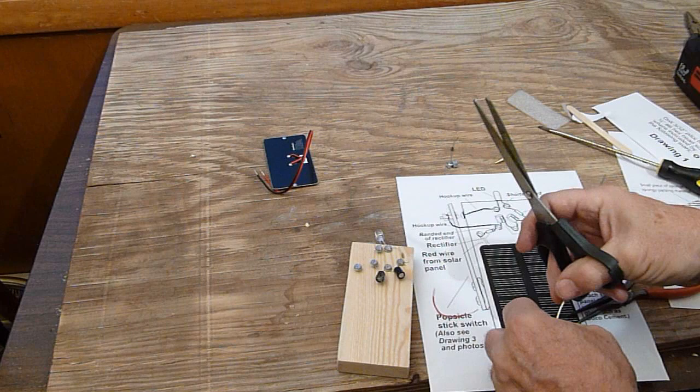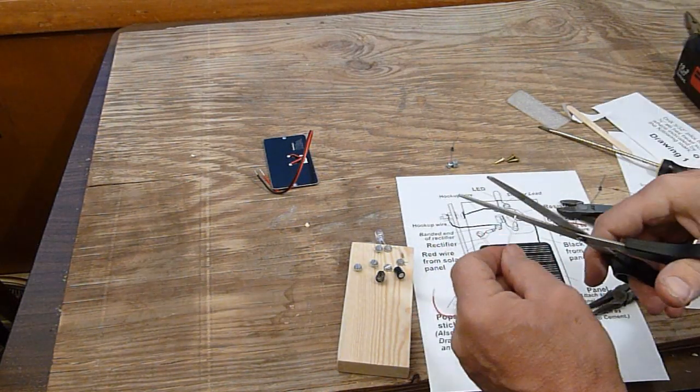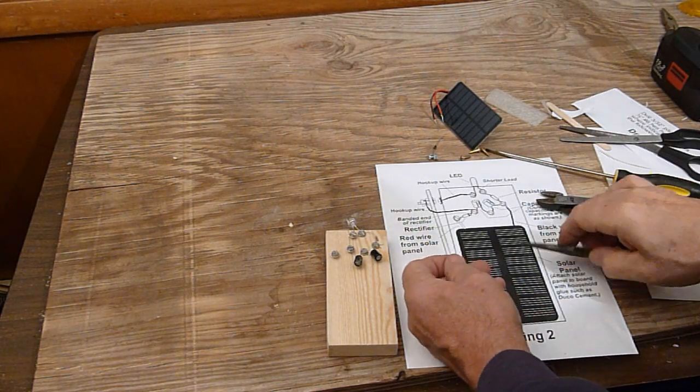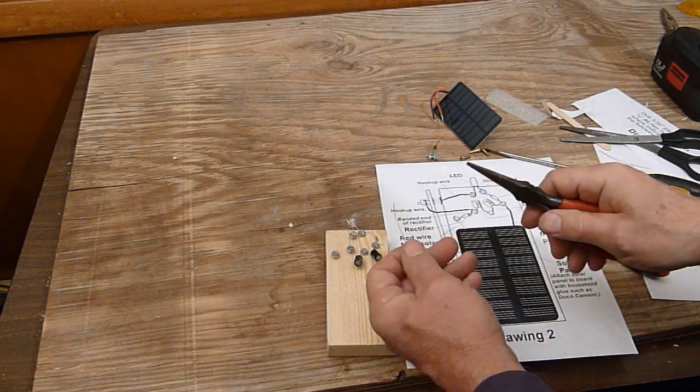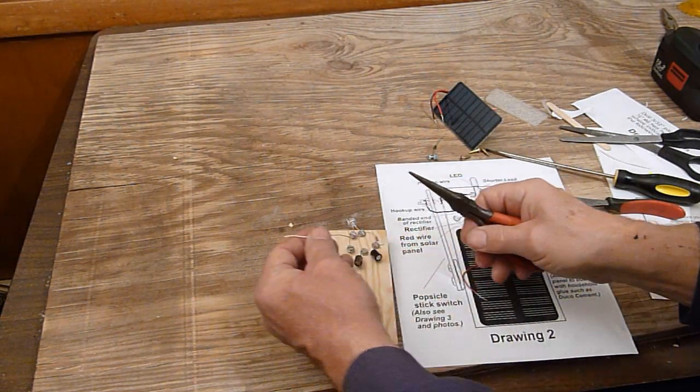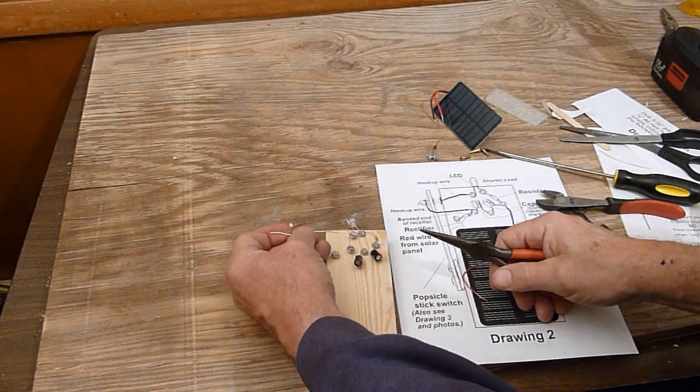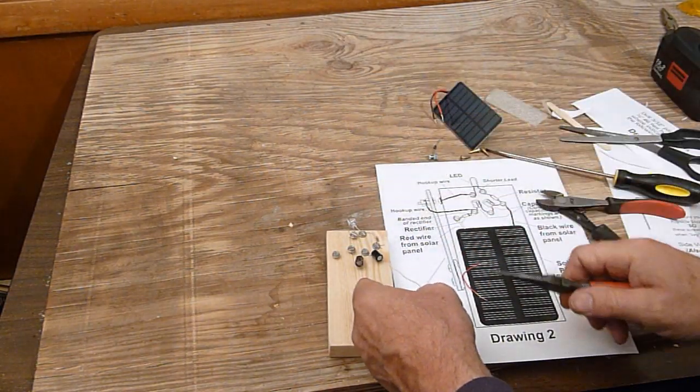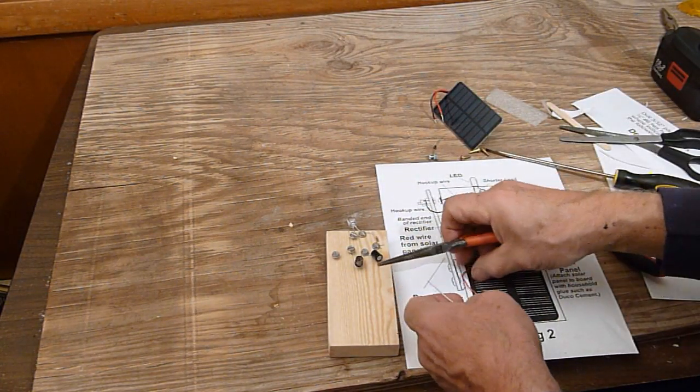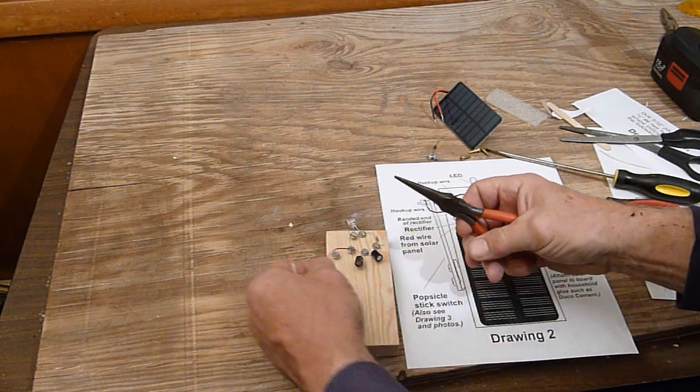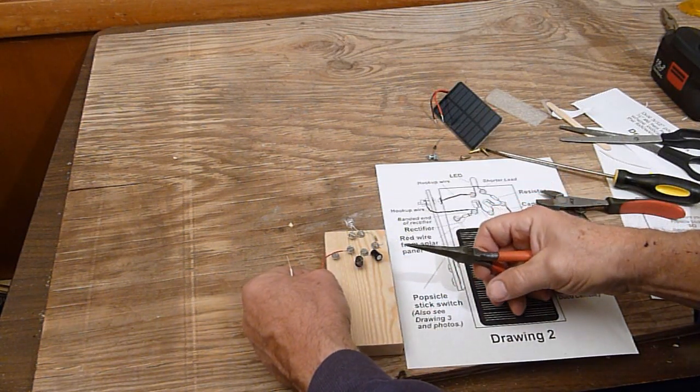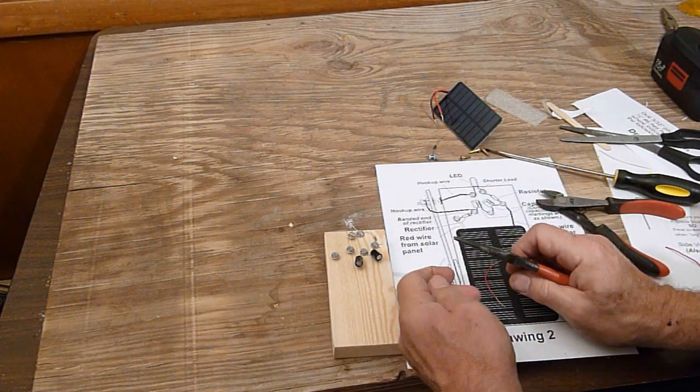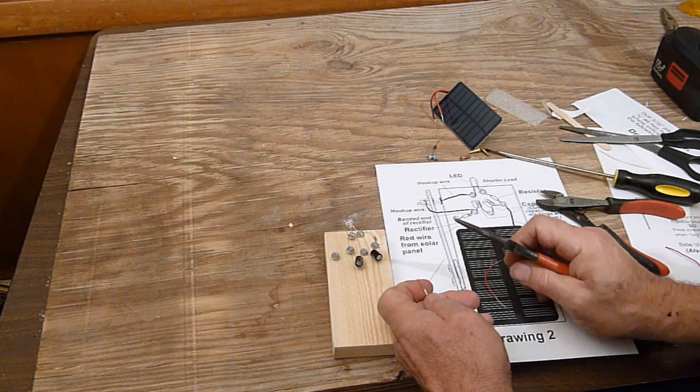Just pull it up like that. And do the same with this one here. In order to hook up these hookup wires, this one here hooks up to the LED and it hooks up to the popsicle stick switch. This one here hooks up at this connection here and this also hooks up to the popsicle stick switch.